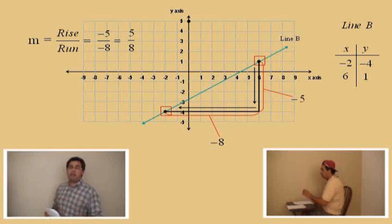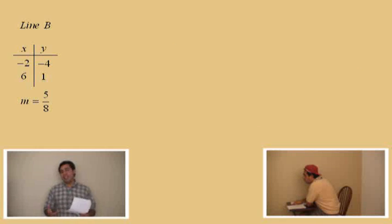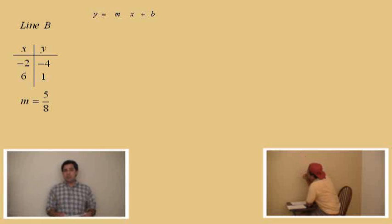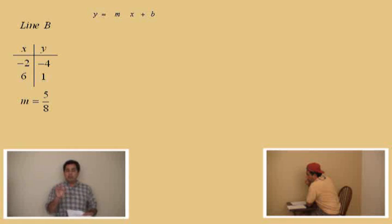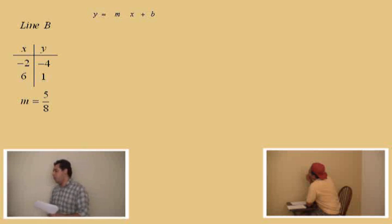Now, we're going to do this problem using the slope-intercept form y equals mx plus b. This is how I've been doing it in class, so we won't have to remember the point-slope formula. These problems can simply be done by remembering the slope formula — m equals y2 minus y1 over x2 minus x1 — but here we're simply using the y equals mx plus b formula, which is the slope-intercept formula.